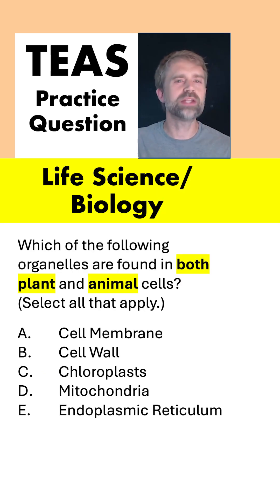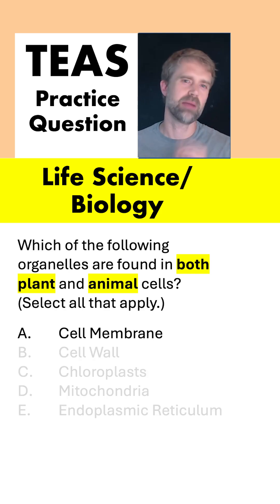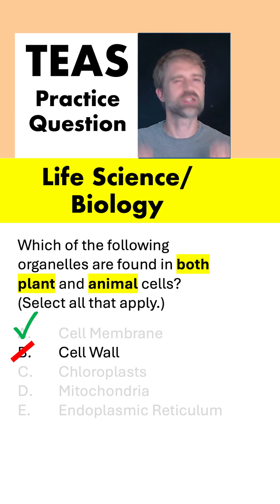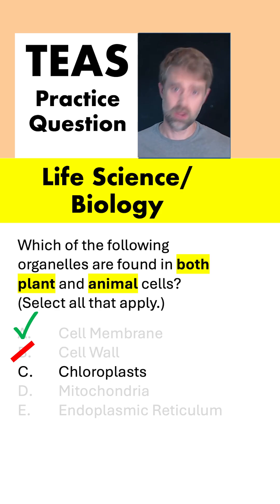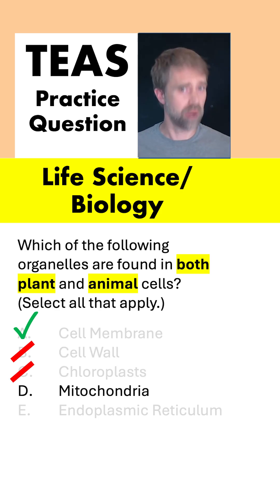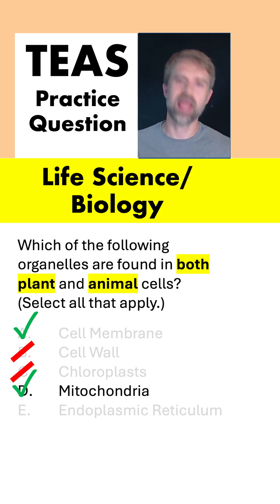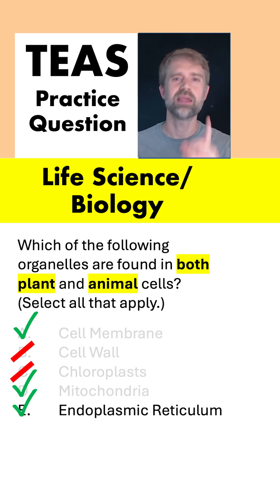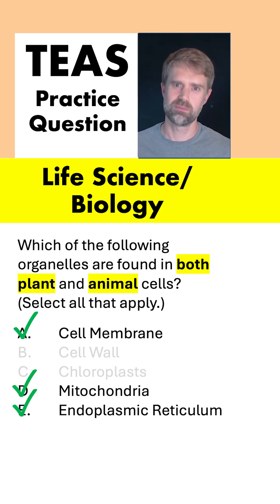So, which do we see in both plant and animal cells? Cell membrane? Yep, they both have it. Cell wall? No, that's only in plants. Chloroplast? Only in plants. Mitochondria? Yep, plants and animals. And endoplasmic reticulum? Yes, you find that in both.